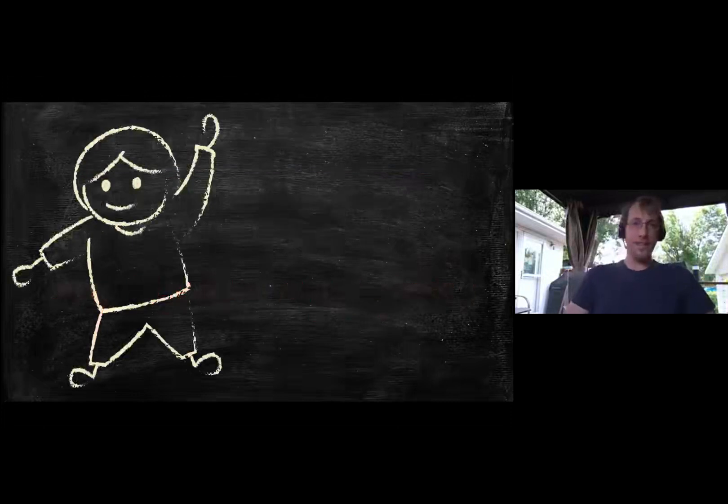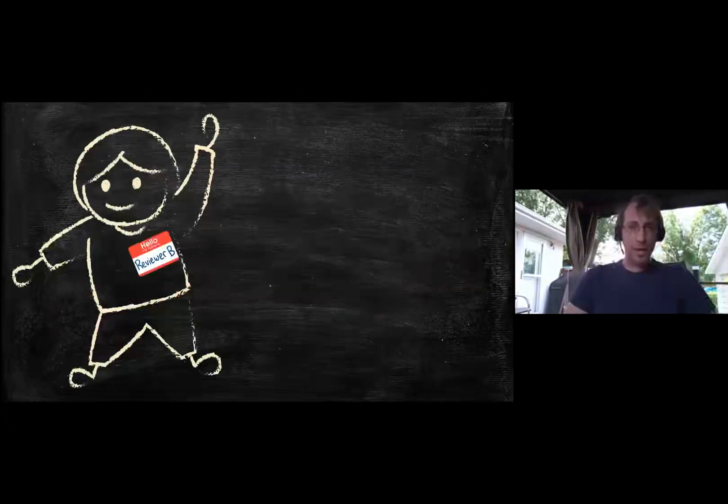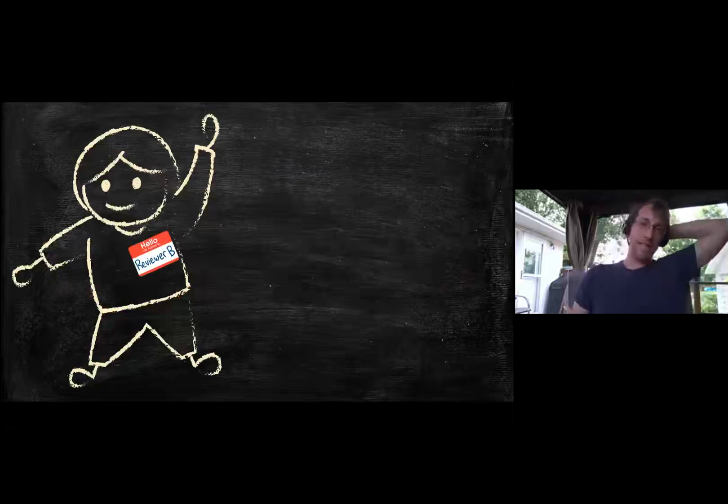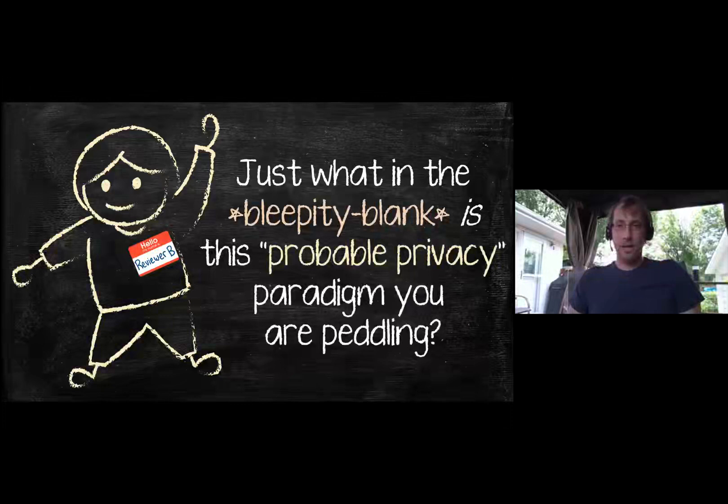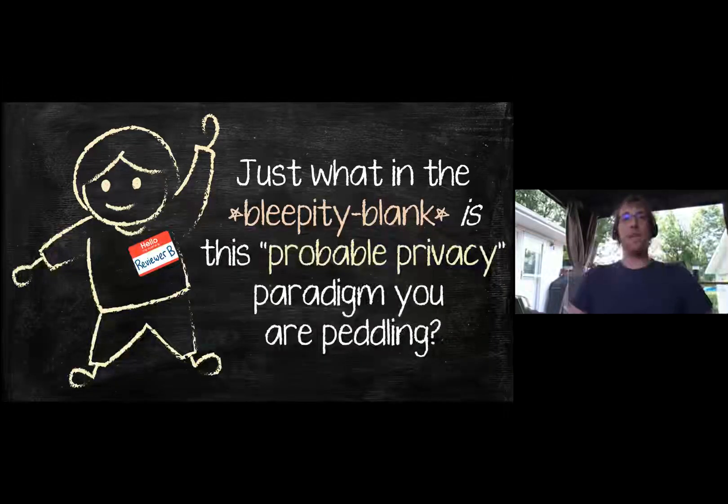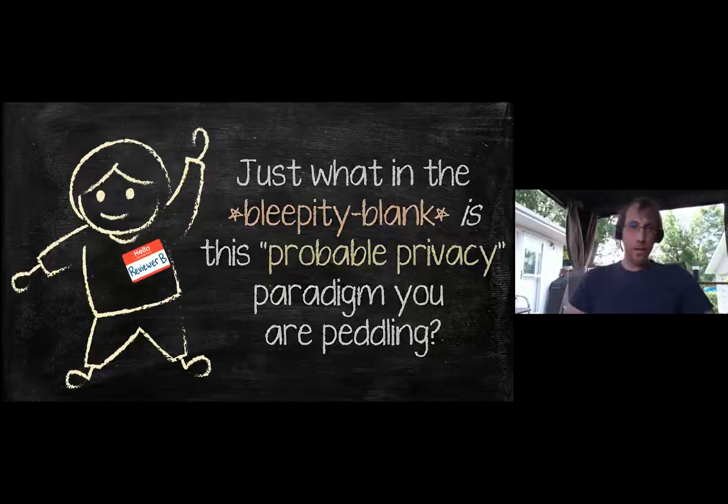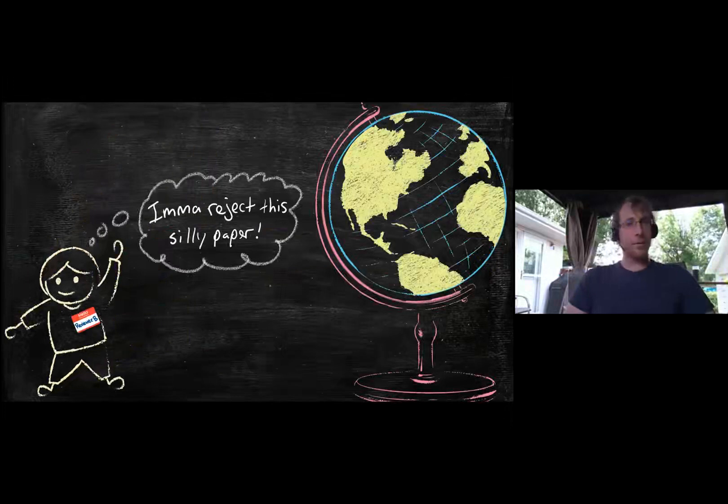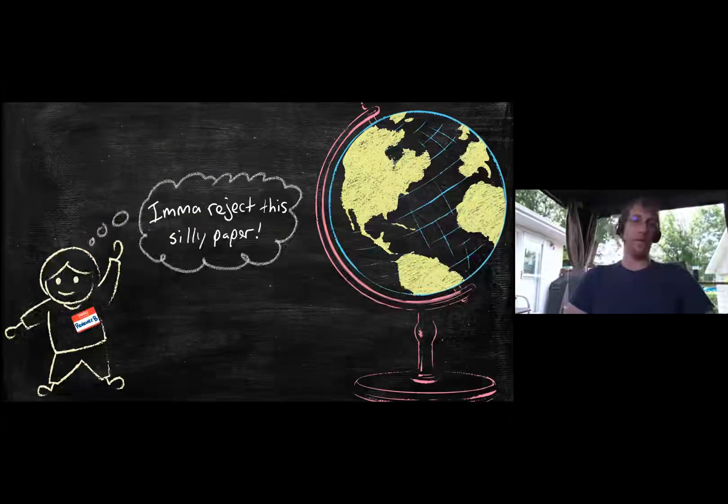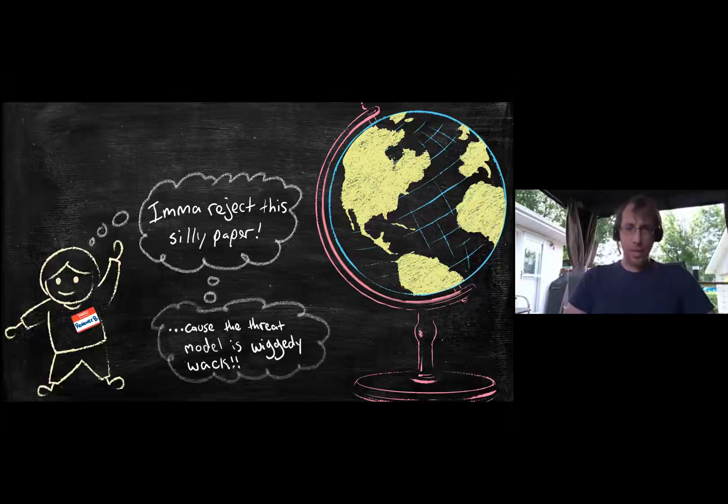Oh, we have our first question. Who's asking this question? Oh, man. Reviewer B. I hate reviewer B. What's your question, reviewer B? Just what in the bleepity blank is this probable privacy paradigm you're peddling? Well, I'm getting there. Let me answer that question with a hypothetical scenario. Let's suppose that Ryan writes a paper and submits it to PETS and reviewer B says, I'm rejecting this paper. So why are you doing that, reviewer B? Because the threat model is wiggity whack. What are you from the 90s?